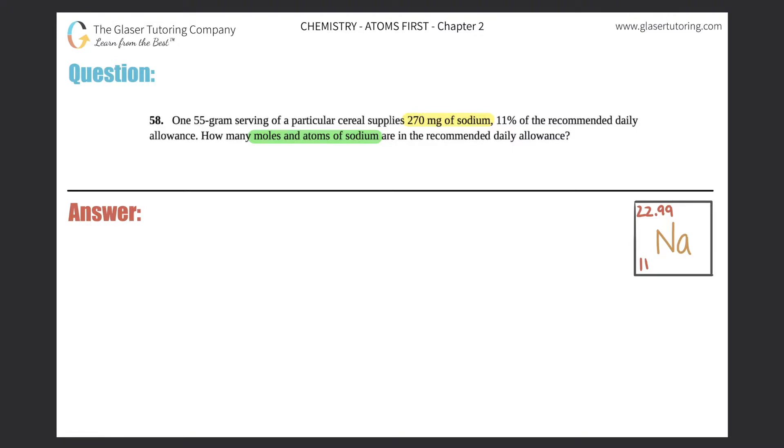So it looks like we have two questions here. We need to take the 270 milligrams of sodium, and sodium is Na on the periodic table, and we have to get to two things. We have to get to moles of sodium, and we have to get to atoms of sodium. Let's focus on the first one first, in which we go to moles of sodium, and then we'll worry about how to get to atoms of sodium.